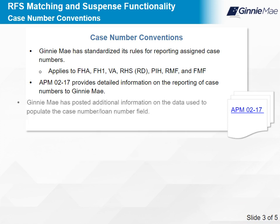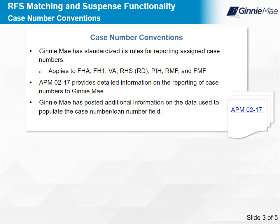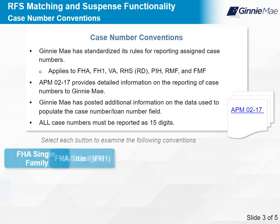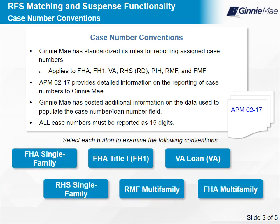Ginnie Mae has posted additional information on the data used to populate the case number field at www.ginniemae.gov. This information includes automated data processing (ADP) codes, FHA case prefix, VA loan type, RHS state code, etc. All case numbers must be reported as 15 digits. Examine the following conventions by selecting each button. Select Next to continue.